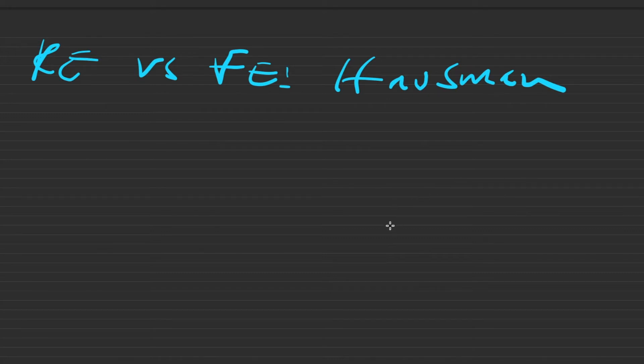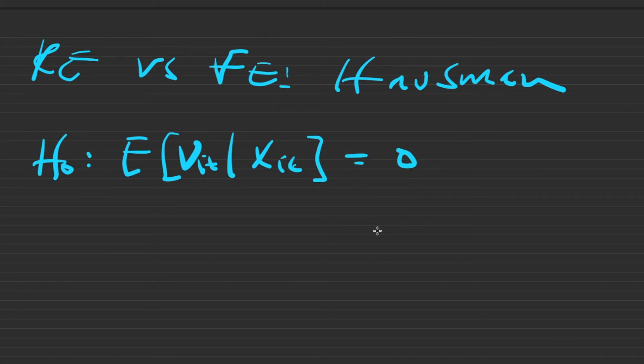Under the null hypothesis, both estimators, the fixed effects and random effects are consistent. However, the random effects estimator is more efficient. So under the null hypothesis, the expected value of vit given the xit is equal to 0. Under the alternative, only the fixed effects estimator is consistent. So under the alternative, the expected value of vit given the xit is not equal to 0.